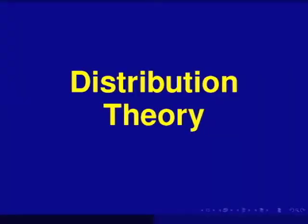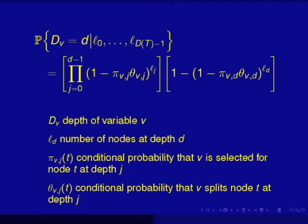So here's a little bit of distribution theory. What I'm showing here is the density for the minimal depth as this product. I'll just highlight a few things that are important. There are three quantities of relevance here: pi, theta, and L. So pi is the probability that if you have a variable, it's a conditional probability—pi is the probability that it's a candidate variable for splitting. Theta is the probability that given that the variable was selected as a candidate variable, you actually split on it. And L are the number of nodes at a given depth. So if you have these three quantities, you can actually write out the density for minimal depth.